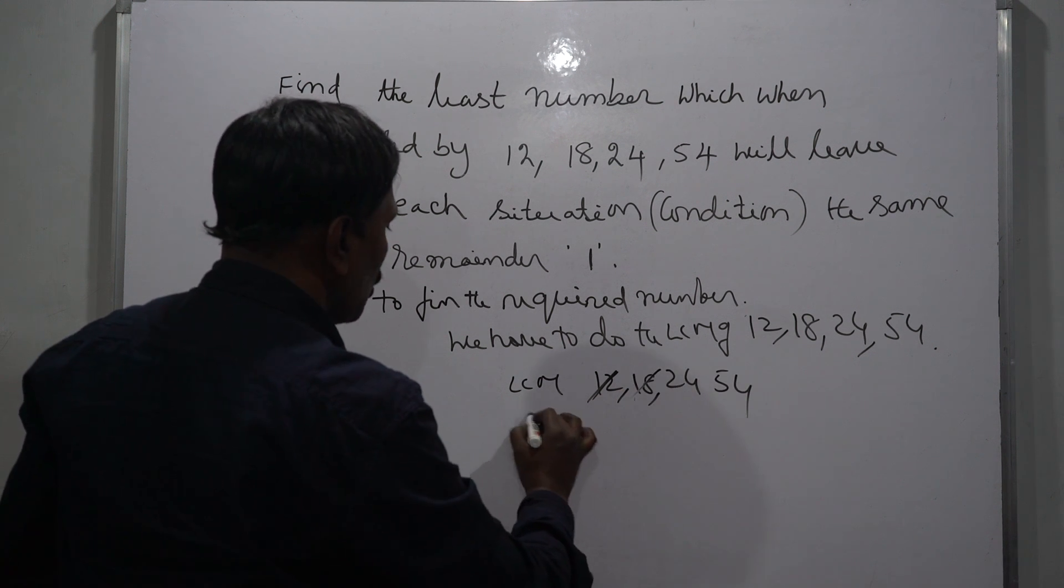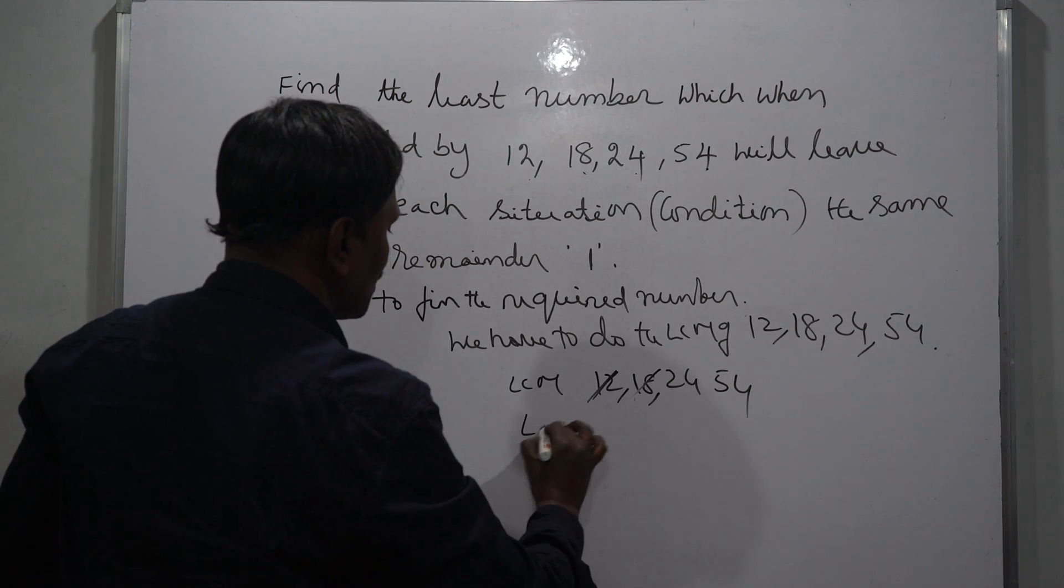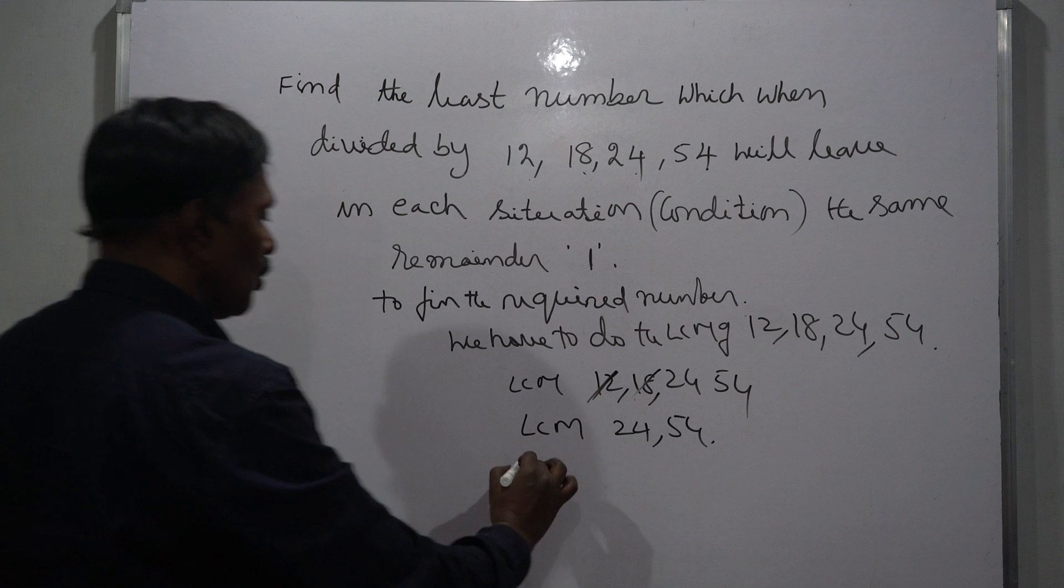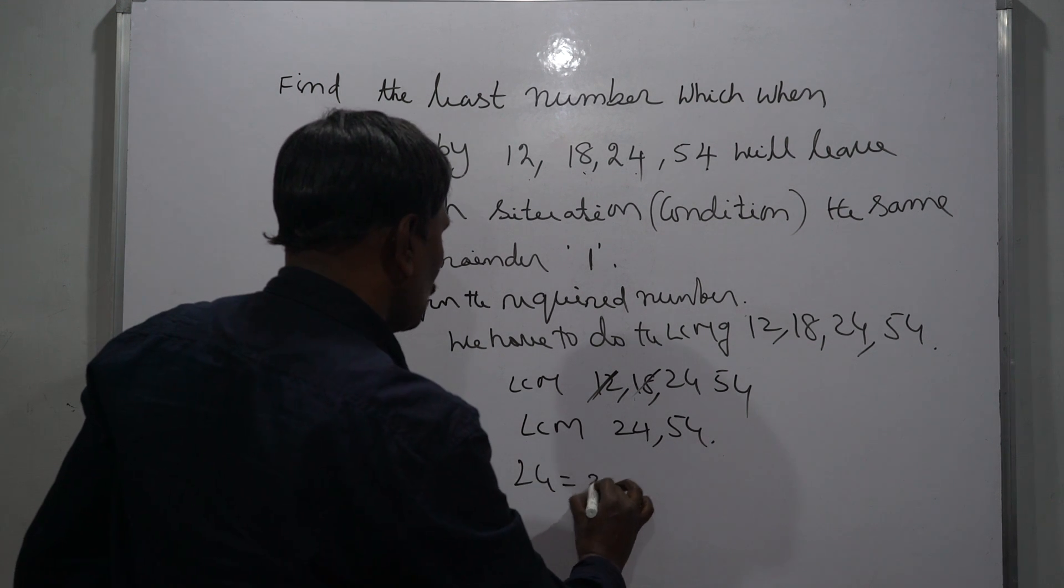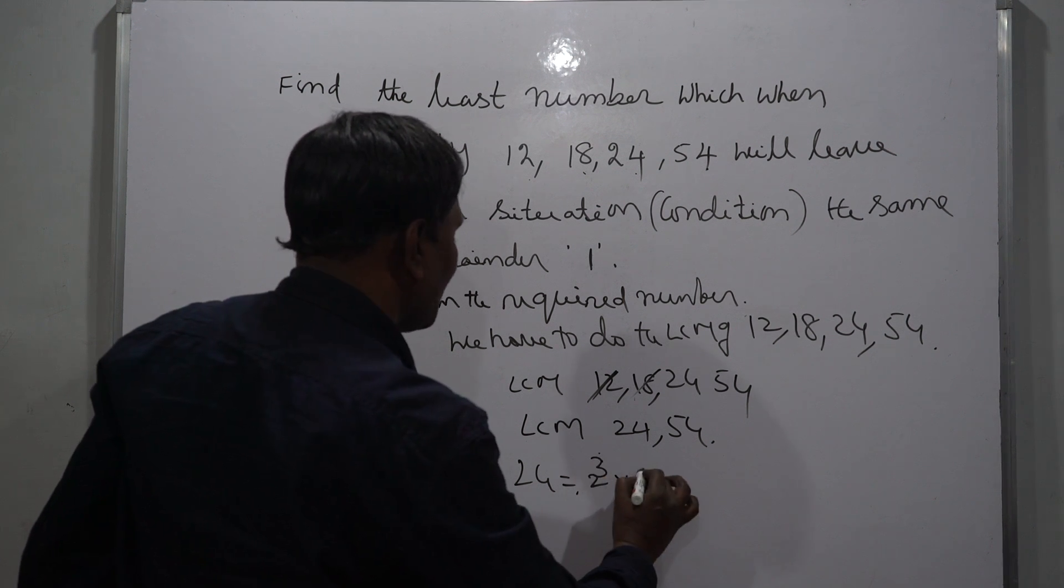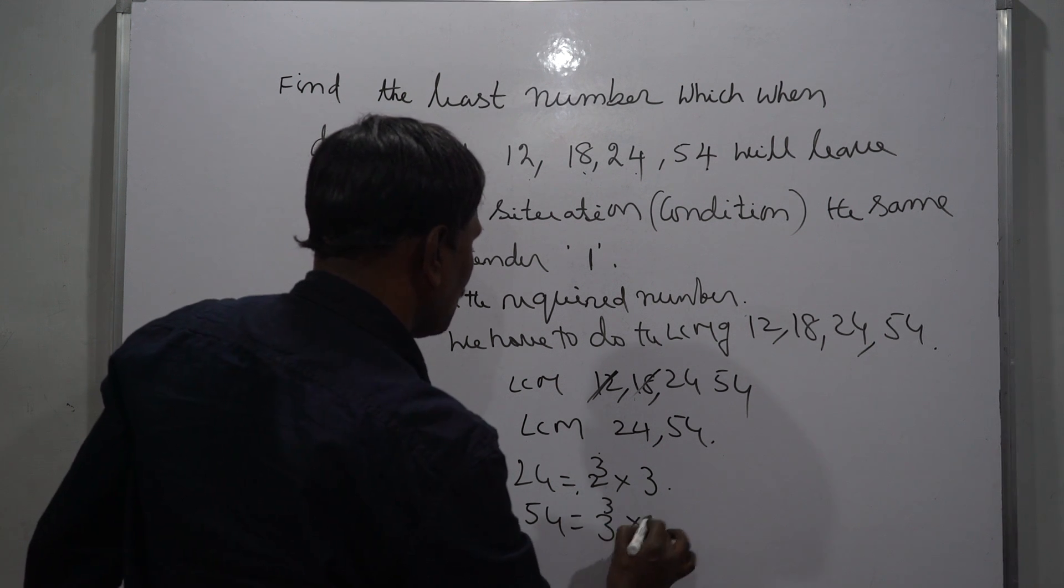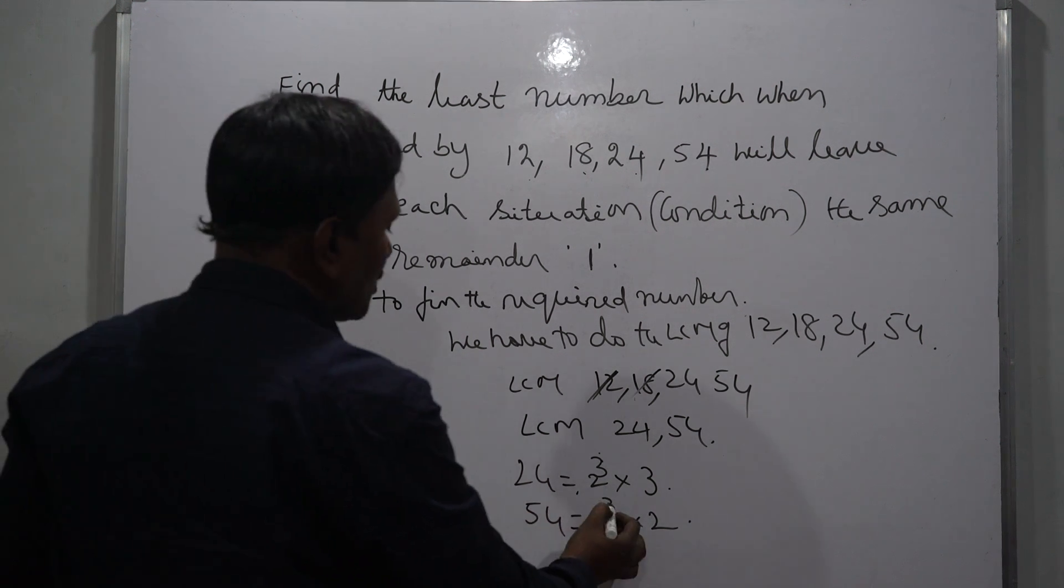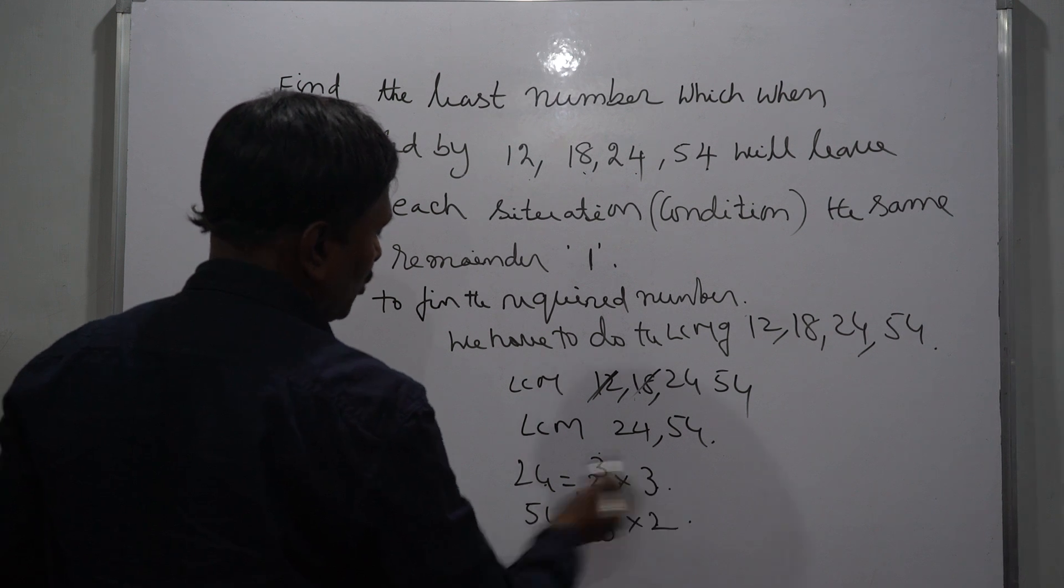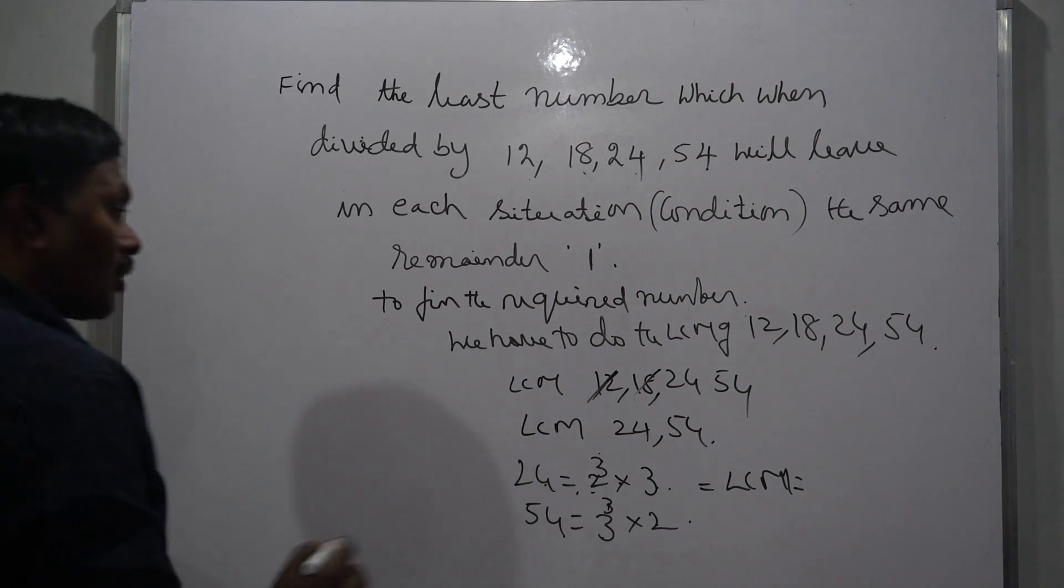24 can be written as 2 cube, which is 8 times 3, which is 24. 54 can be written as 3 cube into 2. 3 cube is 27, 27 times 2 is 54. 24 is 2 cube into 3, so 8 times 3 is 24. So the LCM is 2 cube into 3 cube.